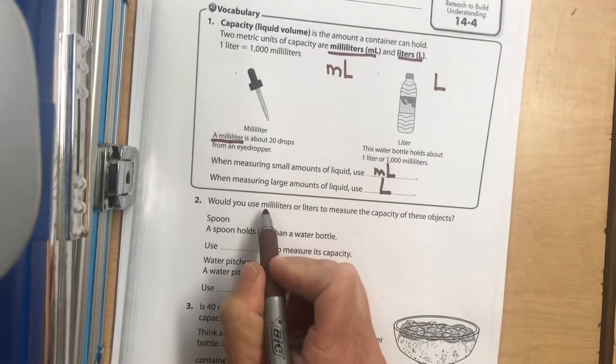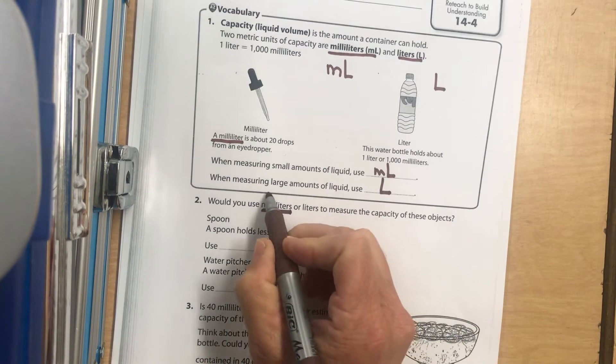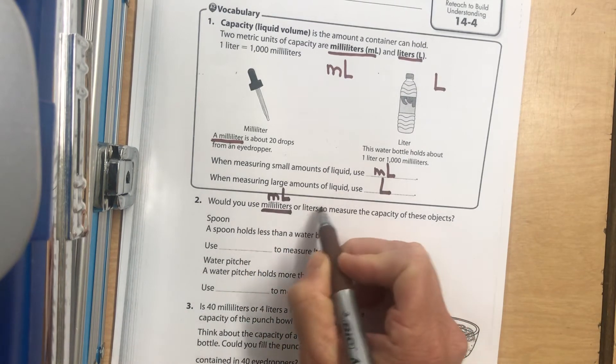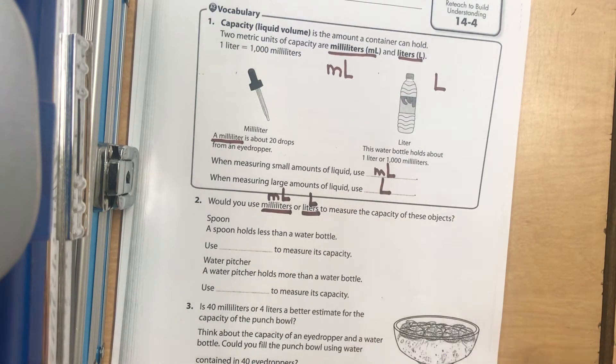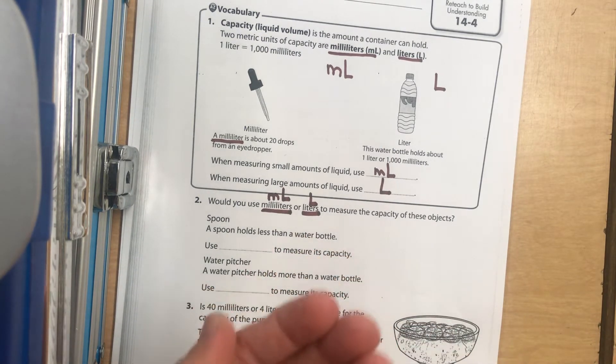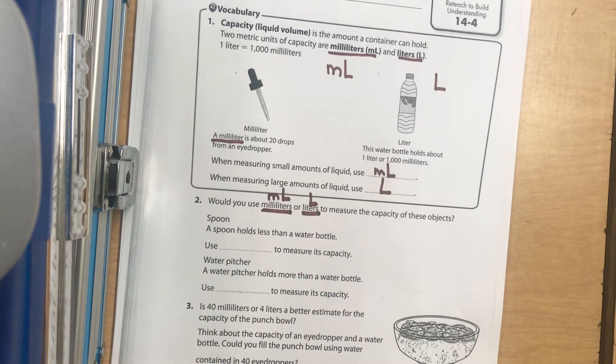Okay, so would you use milliliters, that's mL, or liters to measure the capacity of these objects? A spoon. So you want to see how much liquid fits inside of a spoon. Would you use milliliters or liters?